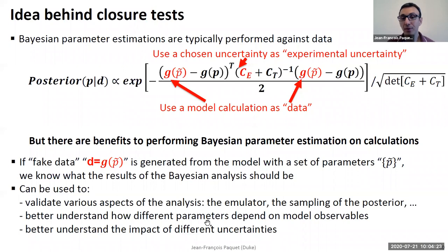You can also better understand how parameters depend on the model observables. So for example, it's typical that you will take some observable, let's say V2, and you will look at how it depends on your viscosity. But really what you want is you want to know how your viscosity depends on your V2. And Bayesian parameter estimation can be used for this, closure tests can be used for this, because you don't need to tie yourself to experimental data.